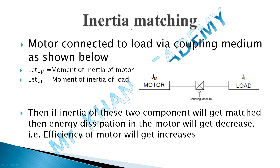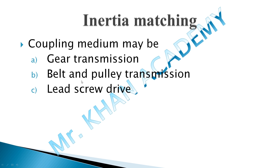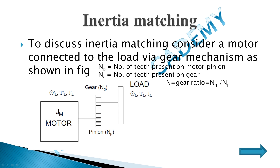I will explain the relationship and how heat dissipation decreases in this video. The coupling medium might be gear transmission, belt and pulley transmission, or lead screw, but for inertia matching we will consider the load connected via gear mechanism. On the load side, the properties are: θl (position), Tl (torque), and Jl (moment of inertia). The load side is connected via gear and pinion with number of teeth T and t.